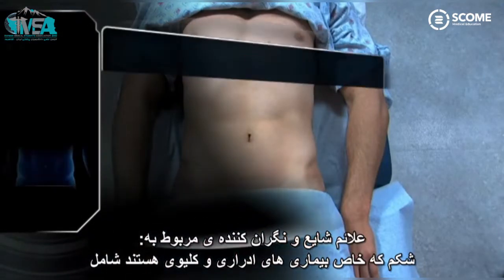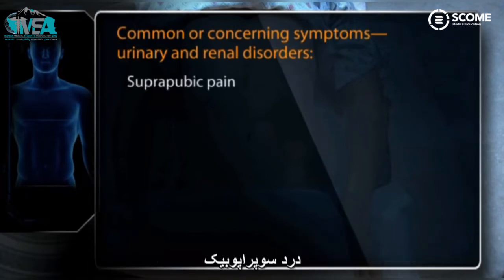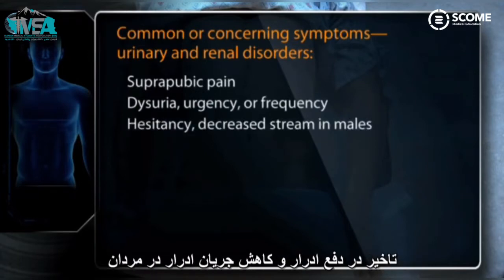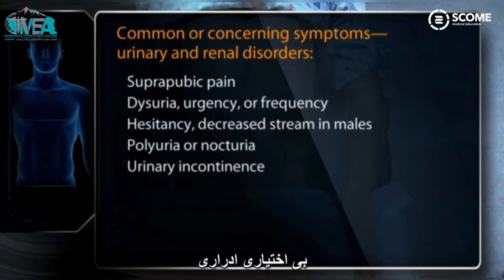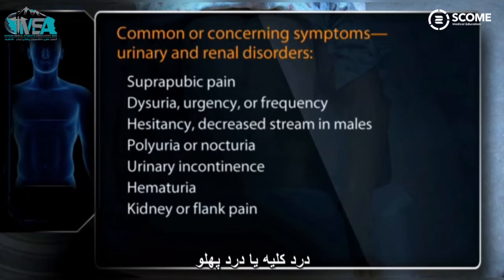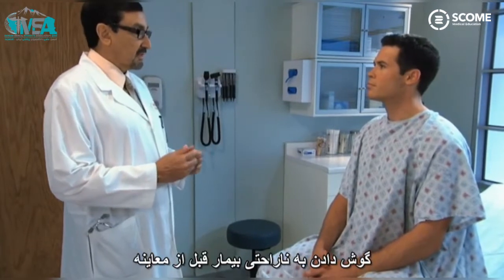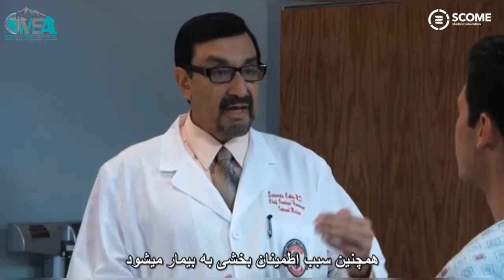Common or concerning symptoms relating to the abdomen and which are specific to urinary and renal disorders include suprapubic pain, dysuria, urgency or frequency, hesitancy, decreased stream in males, polyuria or nocturia, urinary incontinence, hematuria, kidney or flank pain, and ureteral colic. Eliciting the patient's concerns before the examination makes your examination more efficient and more reassuring to the patient.